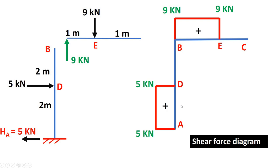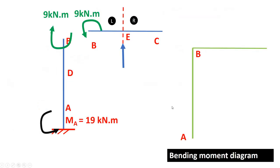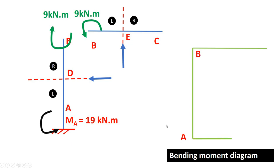Now let us draw the bending moment diagram. We have an anti-clockwise moment of 19 kN·m at A and a clockwise moment of 9 kN·m at B. Looking at sign convention — on the left side, anti-clockwise is negative, and in the right portion the clockwise moment is also negative. So both 19 and 9 are negative moments, and I have drawn the diagram on the inside of the frame.